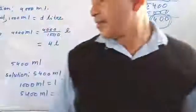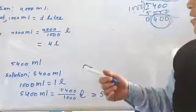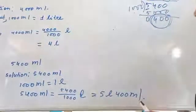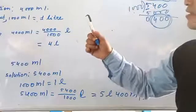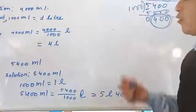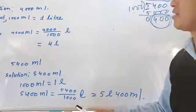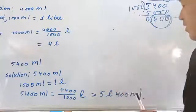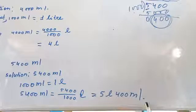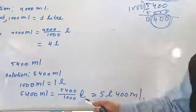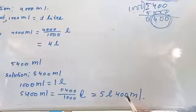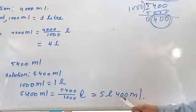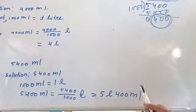This is how we change milliliters into liters — by dividing. Jabb bhi aapko milliliter se liter mein badalna ho, 1000 se milliliter ko divide karne se liter mein change ho jata hai. Now 400 milliliter is remaining — yahaan 400 liter nahi ban raha, so we write 400 as it is in milliliters.